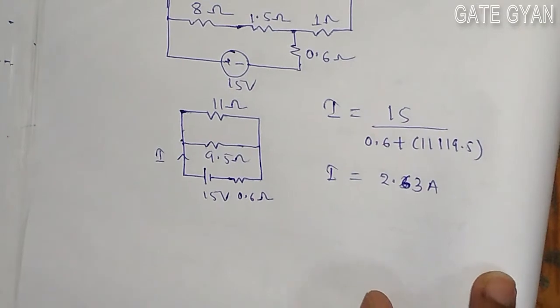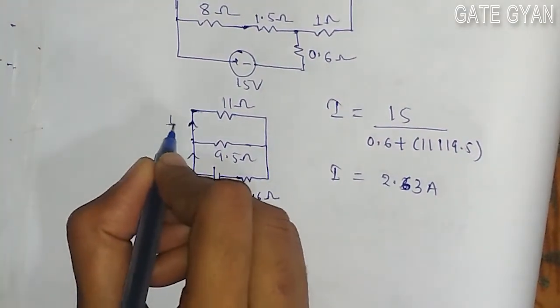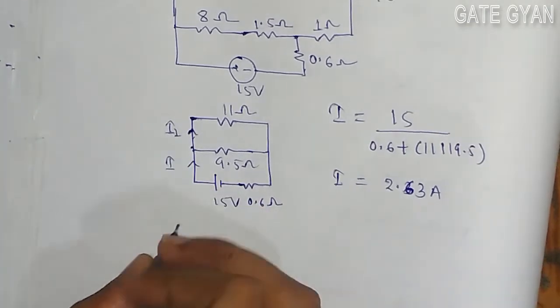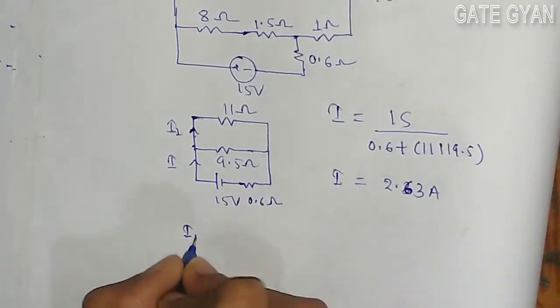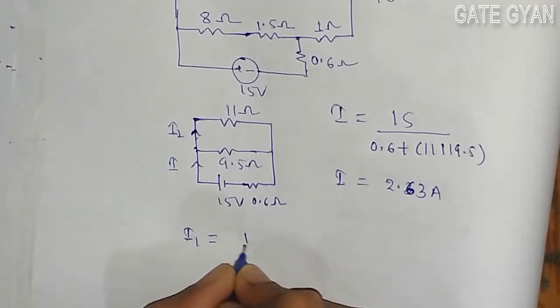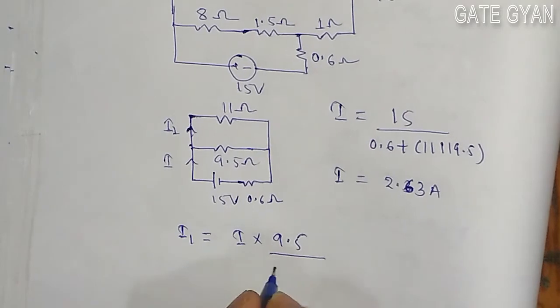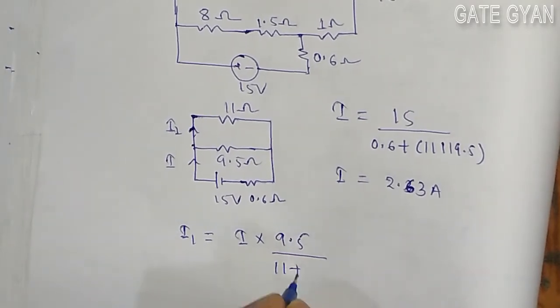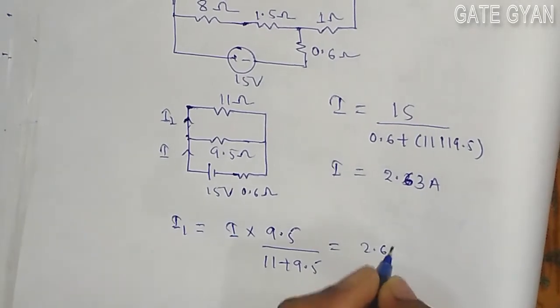I is going to be 2.63 ampere. Now to get this current I_1, from current divider rule, I_1 is going to be equal to I into 9.5, r2 upon r1 plus r2, so 11 plus 9.5. So I think it's going to be 2.63 into 9.5 by 20.5.